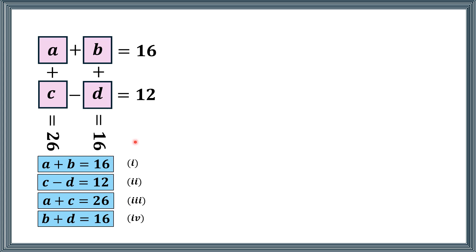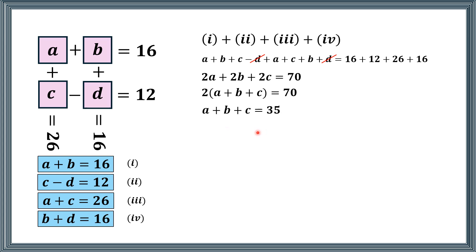Now adding all these equations, equation number one, two, three, and four. Definitely left side will be added on the left side and right side will be added on the right side. So on the left we have the sum of all these variables, and on the right we have these constants. So minus d will be canceled out with plus d, and the other all terms on the left have two times: two a, two b, and two c, and the right side is equal to 70. So taking two common from the left, we will get two times a plus b plus c is equal to 70. And if we divide by two on both sides, we will get a plus b plus c is equal to 35.